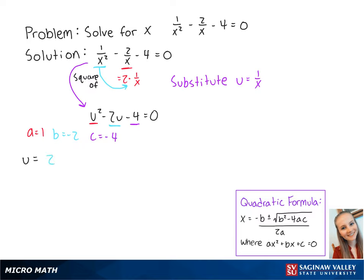Using the quadratic formula, we get u equals 2 plus or minus the square root of negative 2 squared minus 4 times 1 times negative 4, all over 2 times 1.